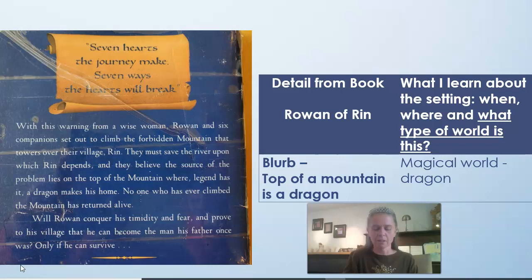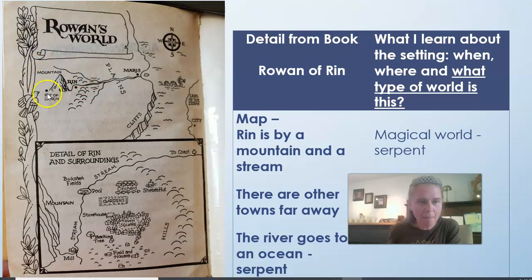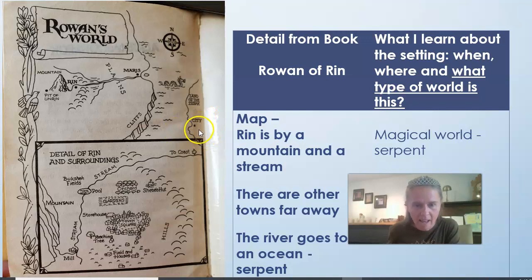No one who has ever climbed the mountain has returned alive. Will Rowan conquer his timidity and fear and prove to his village that he can become the man his father once was — only if he can survive? This book is unusual because it has a map on the inside of the cover. It has a map of Wrynn next to a mountain, and there's a stream that goes by another town called Maris, and out in the river there's a serpent. This is definitely a magical world if it has a serpent in the water.